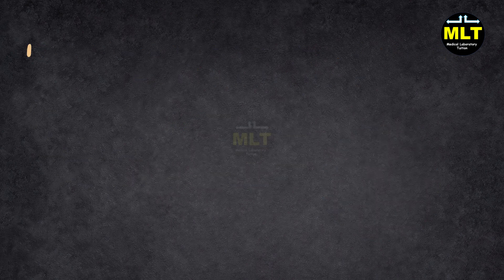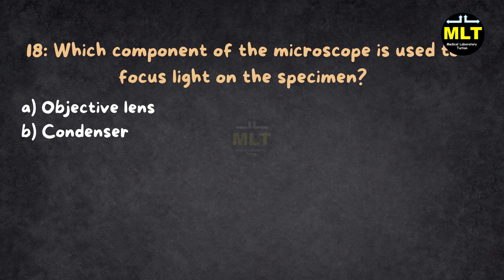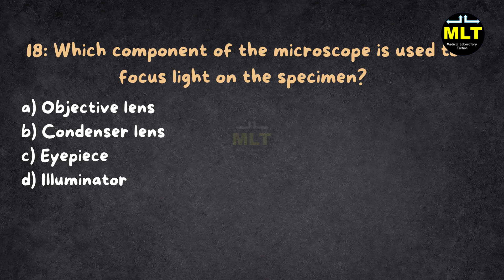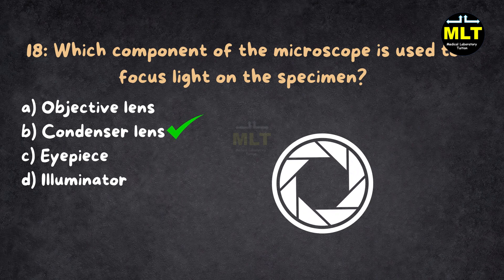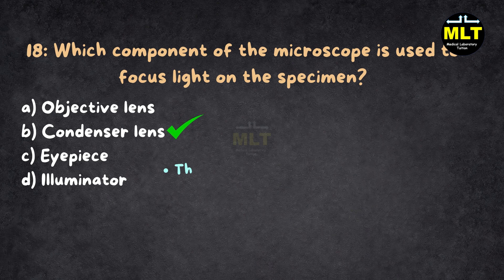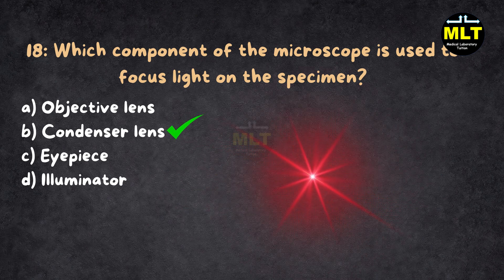Question 18: Which component of the microscope is used to focus light on the specimen? Options: A. Objective lens, B. Condenser lens, C. Eyepiece, D. Illuminator. Correct Answer: B. Condenser lens. Explanation: The condenser lens focuses light onto the specimen to ensure that the image seen through the microscope is well illuminated and clear. The objective lens magnifies the image, the eyepiece is where you view the image, and the illuminator provides the light. It's like the spotlight on the stage.